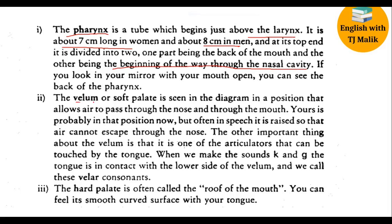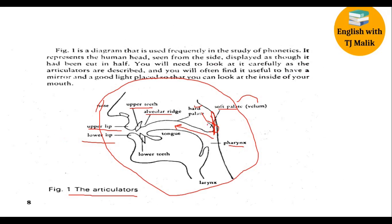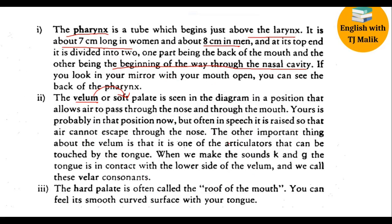The pharynx is divided into two parts: one leading to the mouth and the other going through the nasal cavity. Coming to the second articulator, the velum — also called the soft palate — is seen in the diagram. In speech, it is often in a position so that air cannot escape to the nose. Right now as I am speaking, my velum is closed because I am producing oral sounds. The velum is one of the articulators that can be touched by the tongue. When we make a sound where the tongue is in contact with the lower side of the velum, we call these velar consonants.